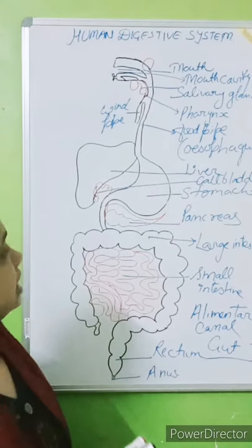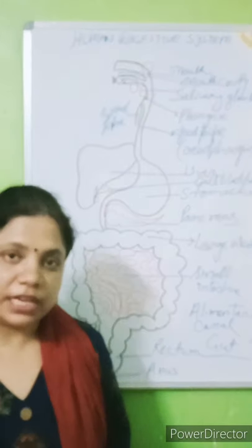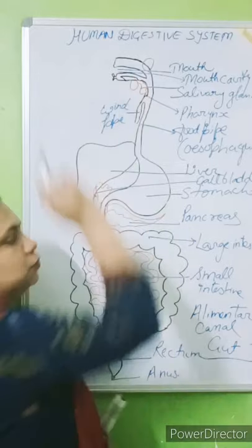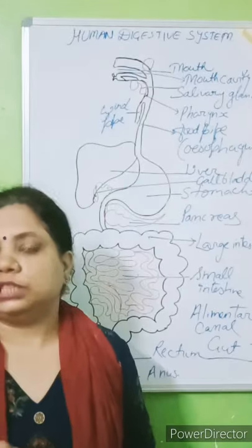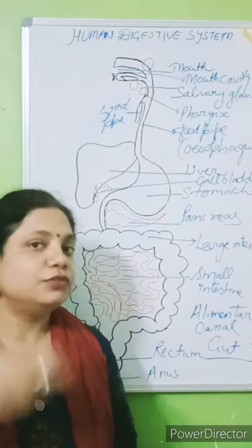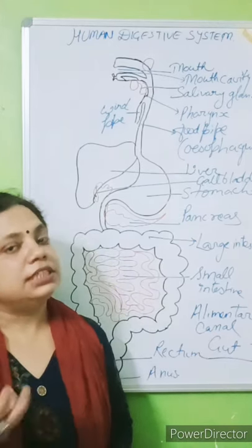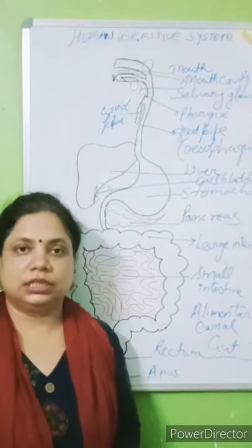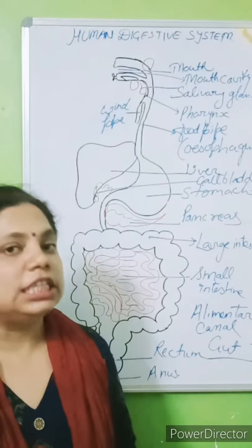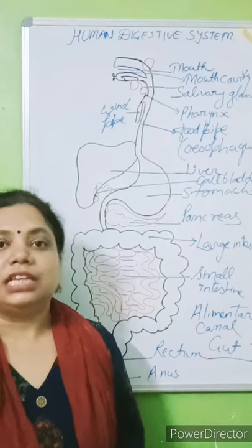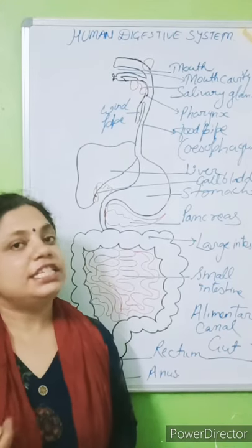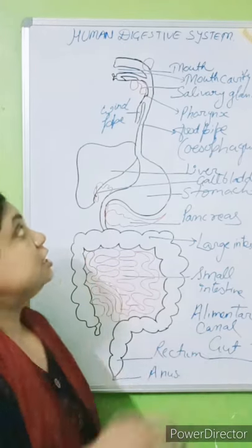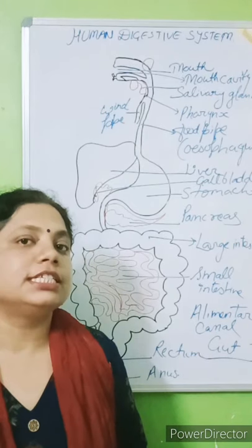Digestion starts from the mouth where we take the food — that is the process of ingestion. In the mouth, teeth and tongue are present, and salivary glands are present. Teeth help to grind and chew the food. The tongue helps in rolling and tasting the food. The salivary glands secrete saliva, which mixes with our food.